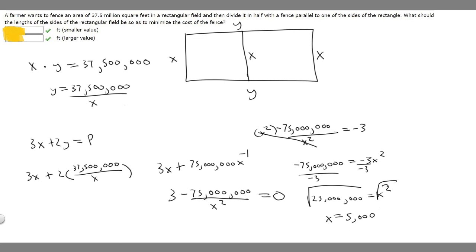So to minimize the cost of the fence, this should be one of the sides. So this side right here is going to be 5,000. But we need to find the other side. So we know that one is 5,000, but we need to find the other.